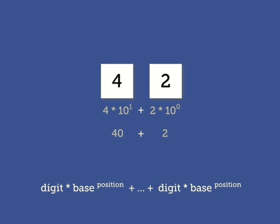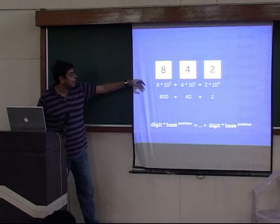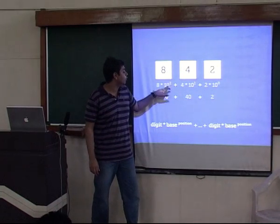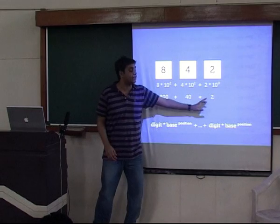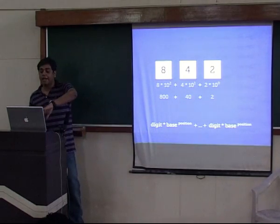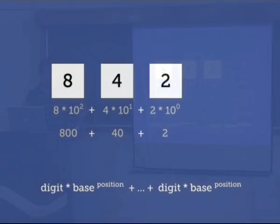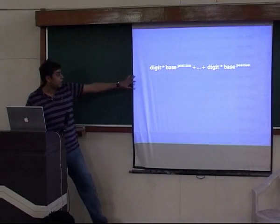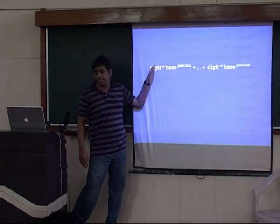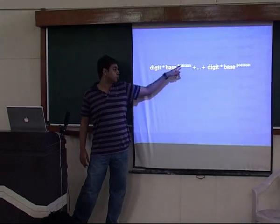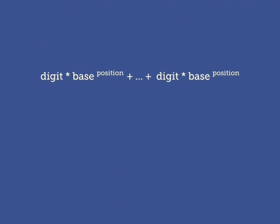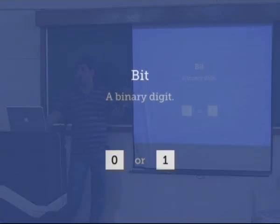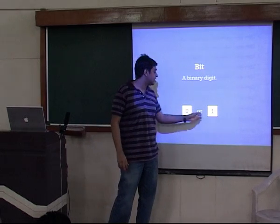If you extend this formula, at position 2 you get 8 × 10^2 = 800, giving you 842. The advantage of this formula is that it helps us think about other number systems. The key formula is: take a particular digit at that position, raise the base to that power, and you can calculate any number value. Binary numbers are similar — instead of 10 digits, they have 2 digits, so they're called base-2 numbers. A binary digit is either 0 or 1, and it's called a bit.